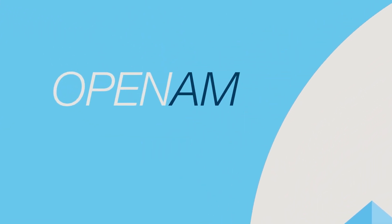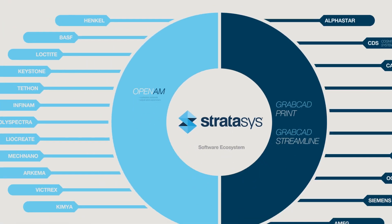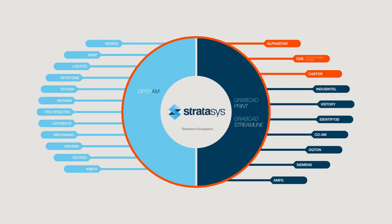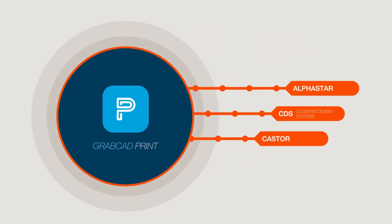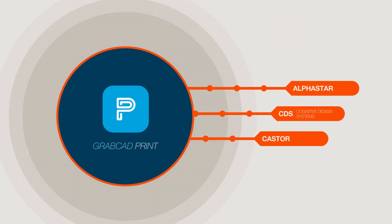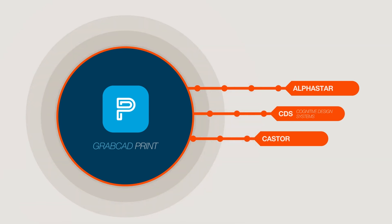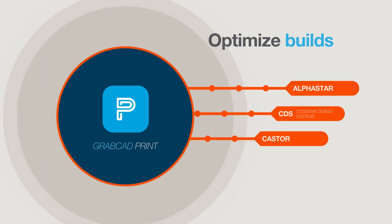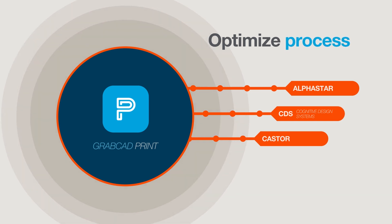OpenAM software allows you to customize materials by adjusting print parameters, which affects the capabilities and characteristics of printed parts. These plugins are directly connected to the GrabCAD Print Pro software and offer complementary functionality. They allow users to optimize builds, budgets and overall processes.